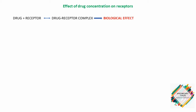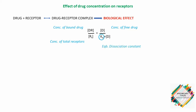By assuming that binding of one drug molecule does not alter the binding of subsequent molecules, and applying the law of mass action, we can mathematically express the relationship between the fraction of bound receptors and the drug concentration. Here, D is the concentration of the free drug, DR is the concentration of the bound drug, RT is the total receptor concentration equal to the sum of bound and unbound receptors, and KD is the equilibrium dissociation constant. The KD value determines the affinity of a drug for its receptor — the higher the KD, the weaker the interaction and the lower the affinity.